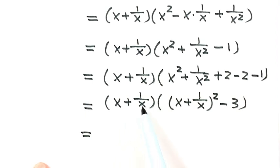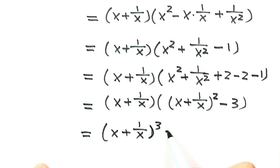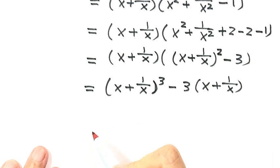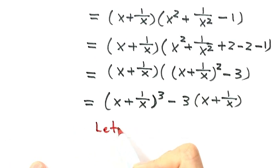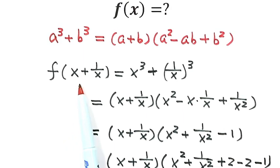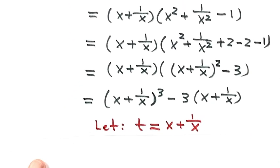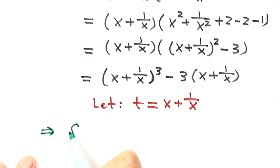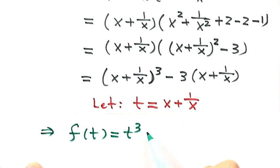Now we have x plus 1 over x appearing in both places, so let's expand the product. We get x plus 1 over x to the third, minus 3 times x plus 1 over x. Now let t equal x plus 1 over x, and use t to replace that expression throughout. So then we have f of t equals t to the third minus 3t. That's the expression for the function.